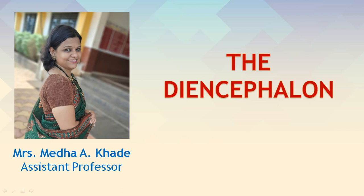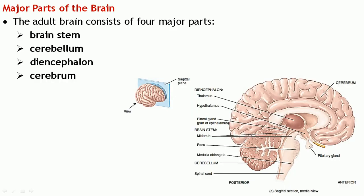Hello everyone and welcome back to our channel. The topic we are going to consider today is the diencephalon, which is a part of the brain. We have considered the parts of the brain before — there are four main parts. We have considered the brain stem and the cerebellum in earlier lectures. Today we shall consider the diencephalon, which basically comprises three parts: the thalamus, hypothalamus, and the epithalamus.